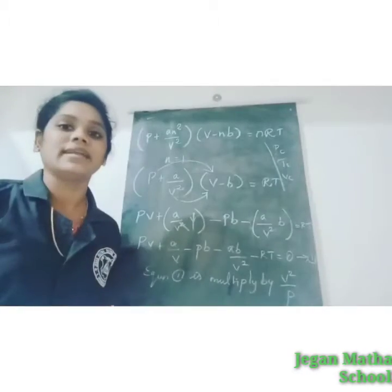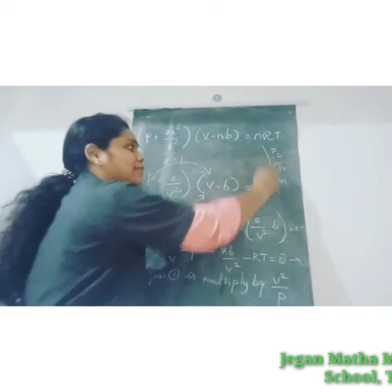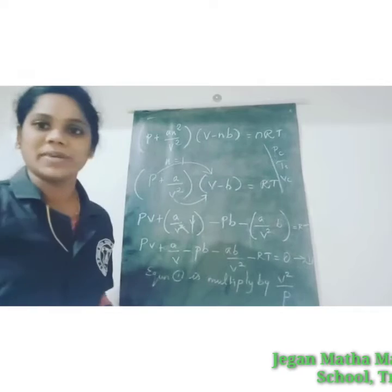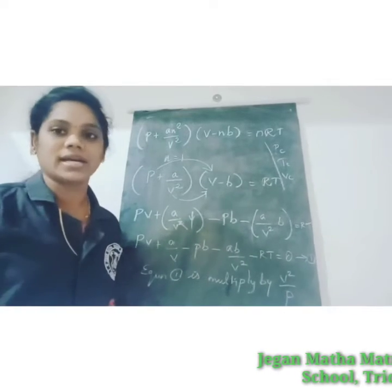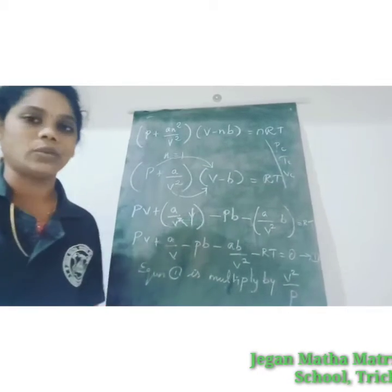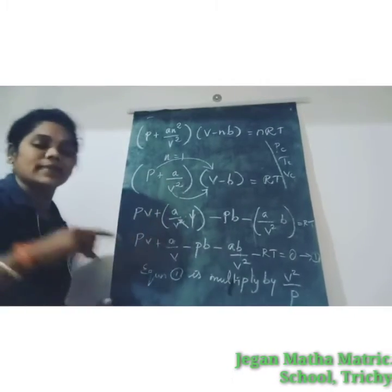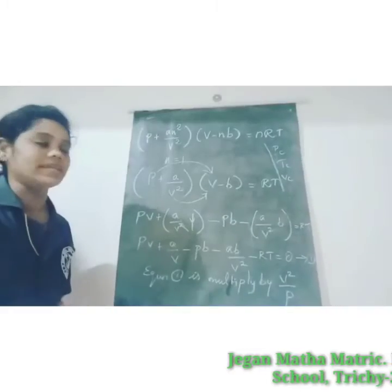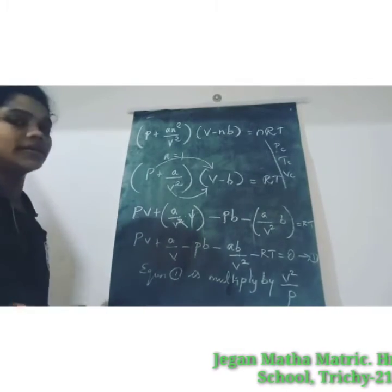Here C represents critical, so Pc represents critical pressure, Tc represents critical temperature, and Vc represents critical volume. Now we calculate Pc, Tc, and Vc.